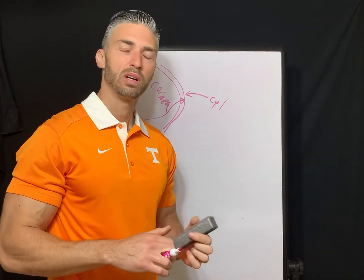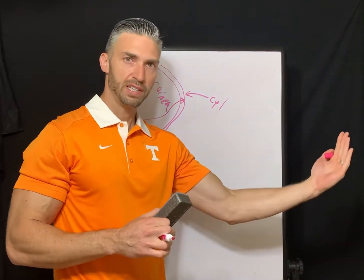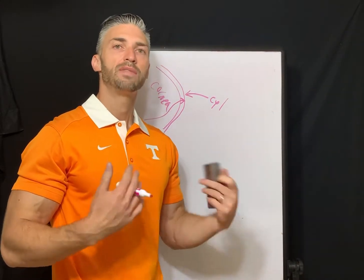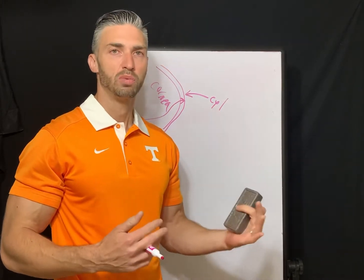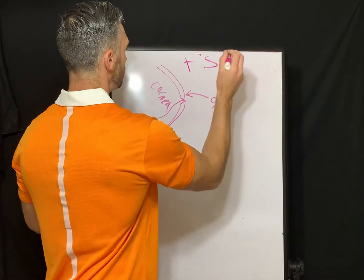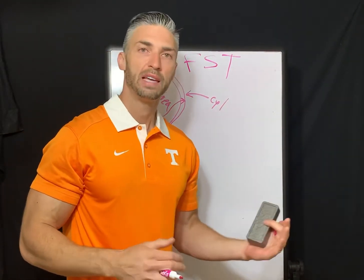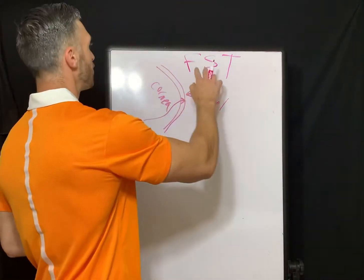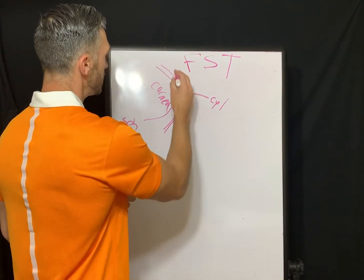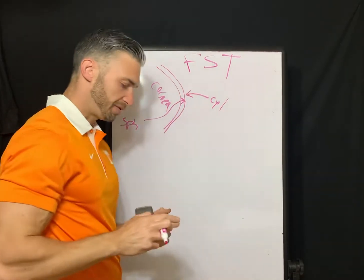A back surface toric lens has a spherical front surface and a toric back surface. The names of these lenses really define what they are. A front surface toric — also called anterior surface toric — has the toric cylindrical component on the front of the lens and a spherical back surface.